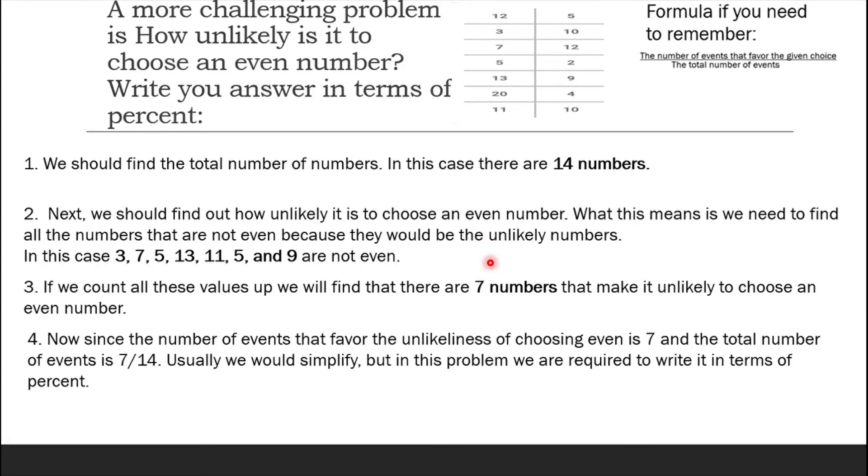Usually we should simplify but in this problem we are required to write it in terms of percent. So instead of simplifying we will just immediately turn it into percent. When you divide 7 and 14 you get 0.5. So when you turn this into a percent you get 50% as the answer.